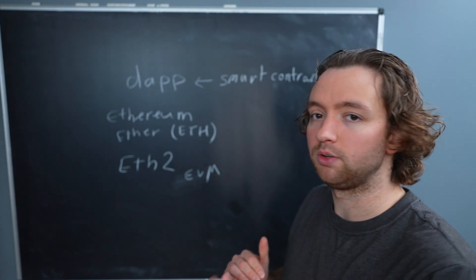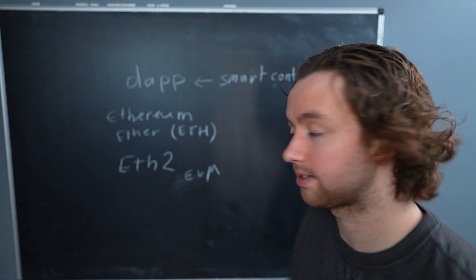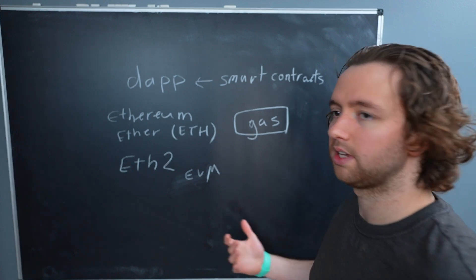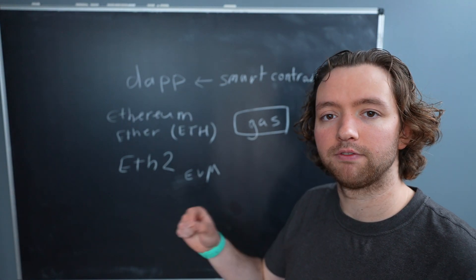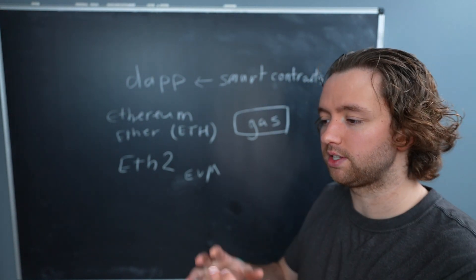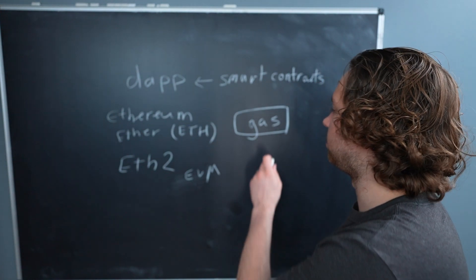So because of this, there is a system tied in with these applications where every single action requires some gas. So gas is essentially just fees. We're going to use a little bit of Ethereum for every single action we do inside of a smart contract.